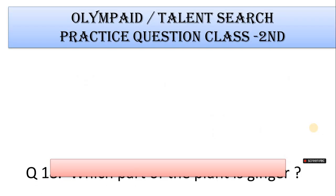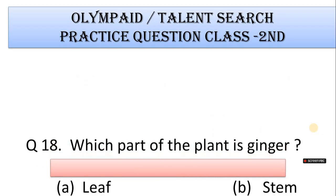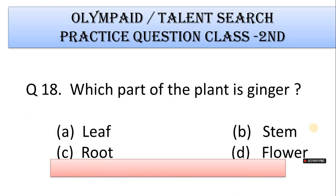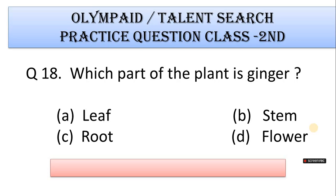Number 18: Which part of a plant is ginger? A. Leaf, B. Stem, C. Root, D. Flower. Correct answer is Option C. Root.